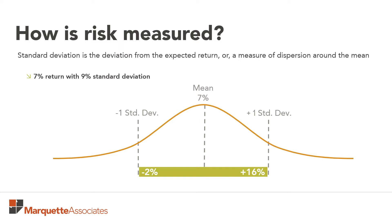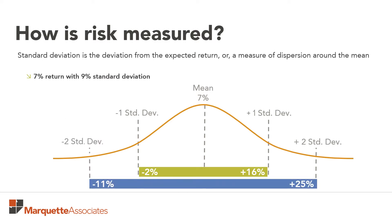In this example, a return two standard deviations above the mean would be very accretive to portfolio values, as that would suggest a return of 25%. However, the opposite is absolutely true as well. A return of two standard deviations below the mean would be a loss of 11% and damaging to a lot of investors.